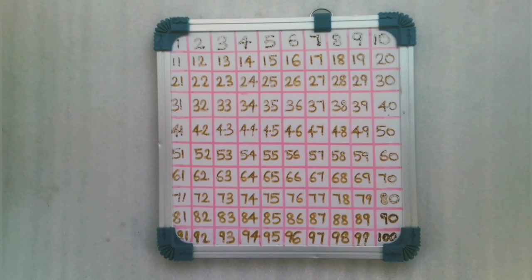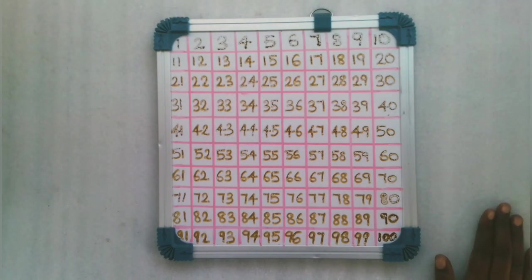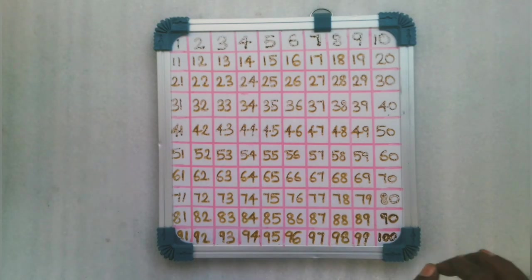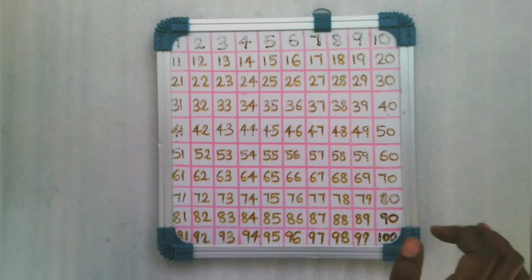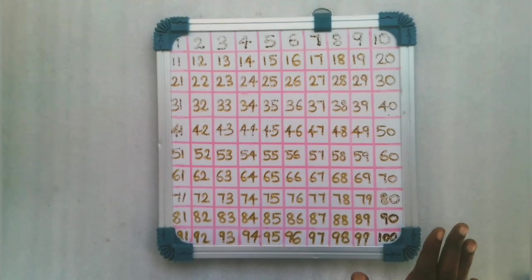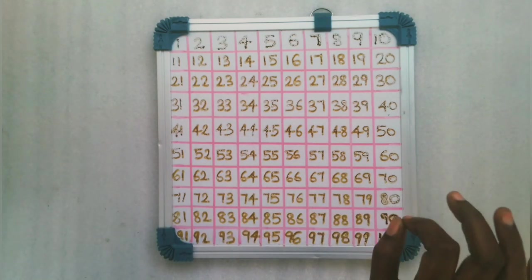The LCM of numbers we are finding is 2, 3, and 5. First, for the number 2, we are going to use the 2 times table. We will draw a horizontal line for all multiples of 2 with black color.